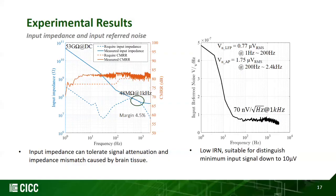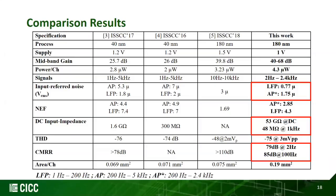We place our analog front-end performance in a comparison table with prior works. The three key advantages of our design are: input impedance — the highest among all compared designs at 53 giga-ohms; very low input-referred noise; and high CMRR. The trade-off is higher power consumption and larger size due to the large PMOS transistor. The mid-band CMRR of the four-channel analog front-end is an impressive 85 dB.